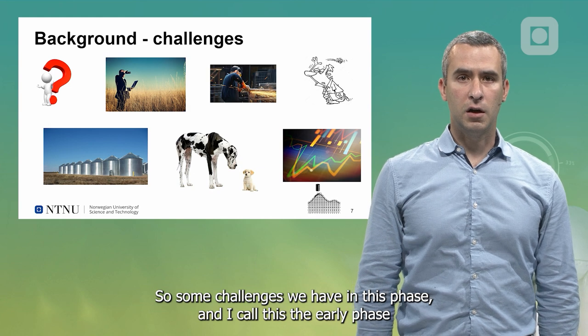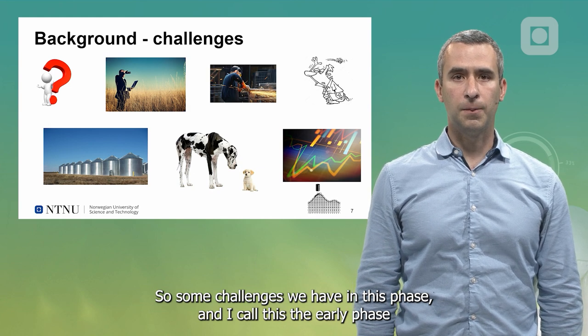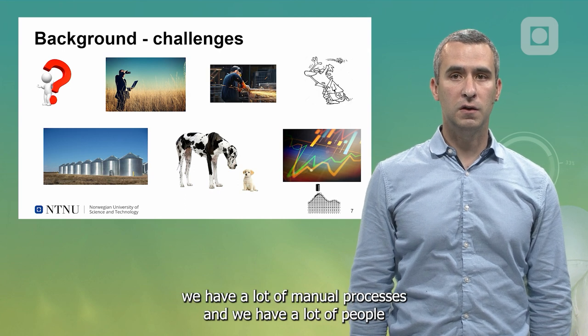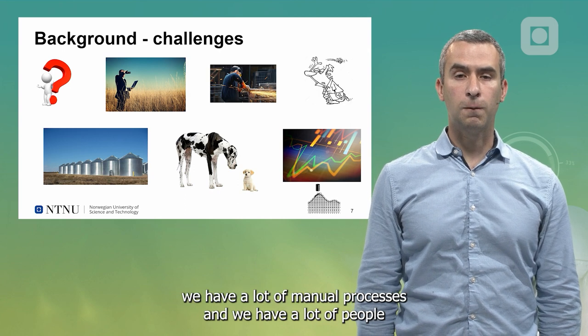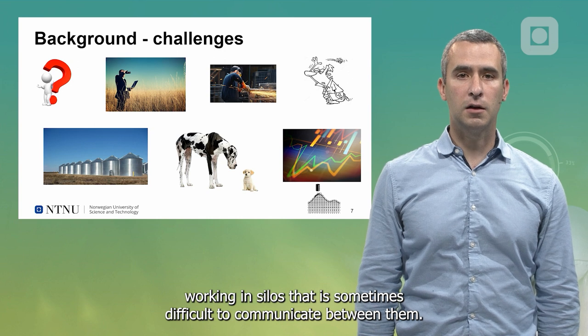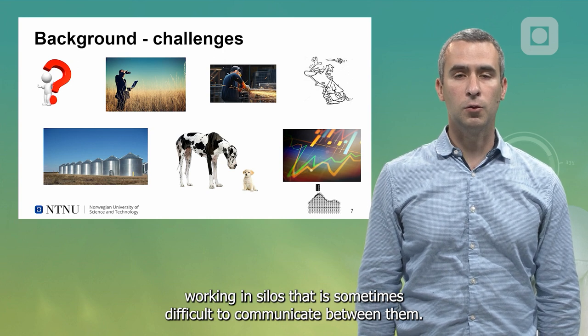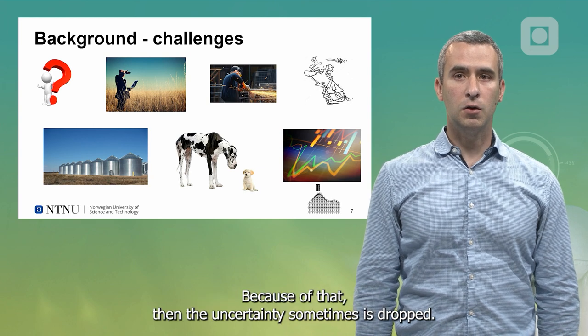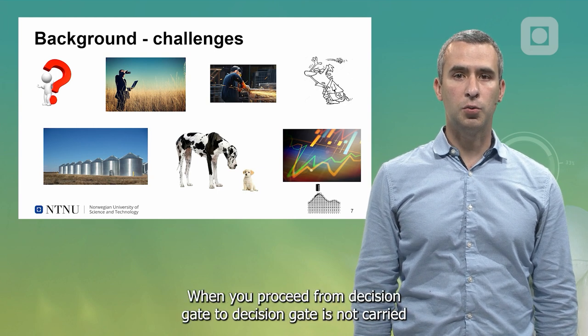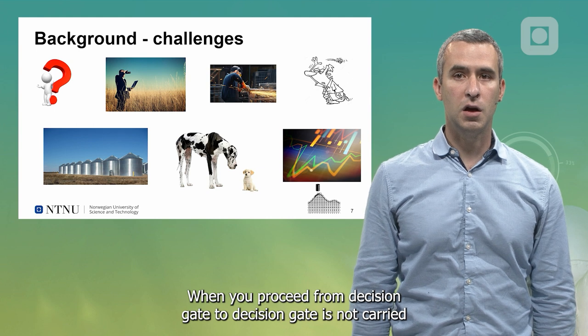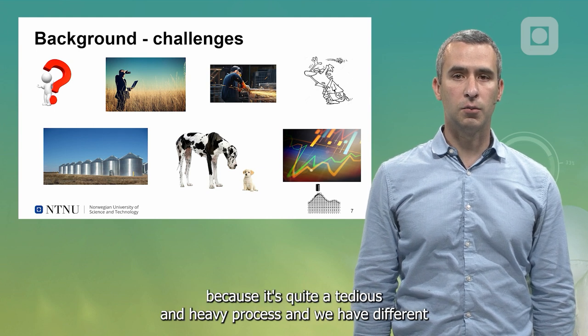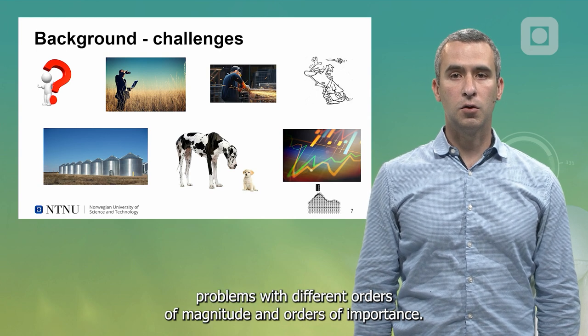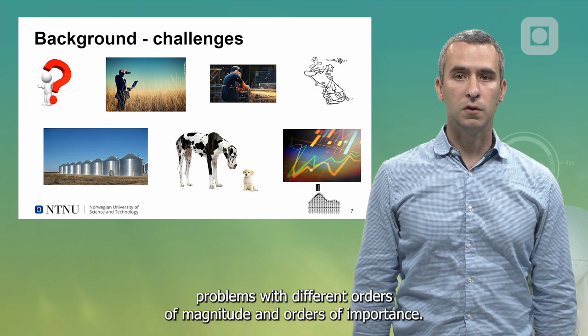Some challenges we have in this phase, which I call the early phase in field planning, include a lot of uncertainty, a lot of manual processes, and a lot of people working in silos that are sometimes difficult to communicate between. Because of that, the uncertainty sometimes is dropped when you proceed from decision gate to decision gate because it's quite a tedious and heavy process. We have different problems with different orders of magnitude and importance.